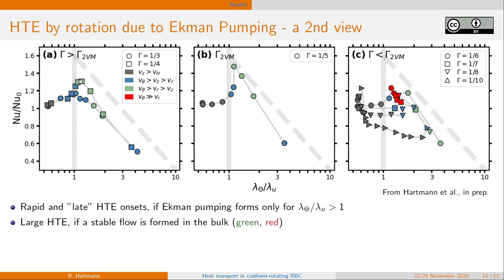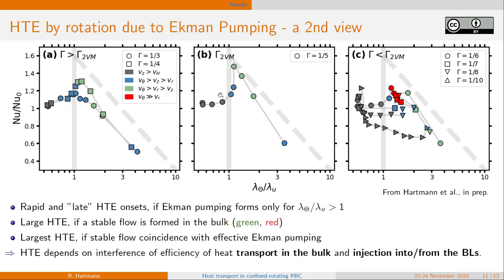What we can also observe is that the formation of a stable flow structure or domain spanning flow structure is always increasing the heat transport. And the largest heat transport is observed when stable domain spanning flow coincides with Ekman pumping being present and a beneficial boundary layer thickness.